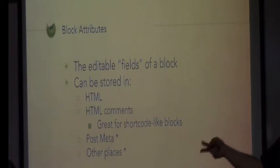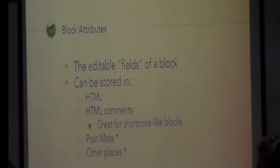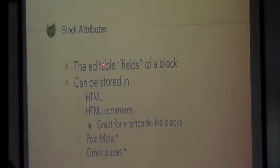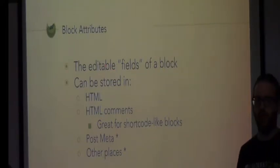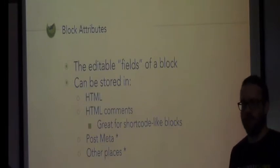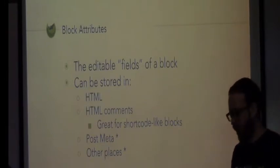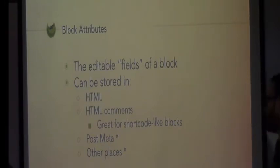Block attributes can be stored in the HTML like we've seen, or stored in the HTML comments like we've seen — especially great for shortcode-like blocks where we're going to server-side render it with that render callback. They can go into post meta — out of scope for today, but you can just say source equals meta. Because sometimes you need to query information from the database, so you put it in post meta. You can get as fancy as you want — it's a form, save it to some other place, whatever your individual needs are. It's open source software, figure it out.